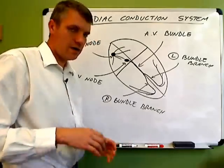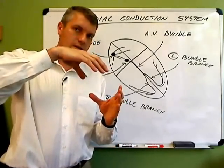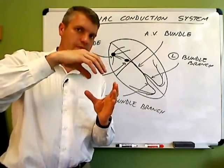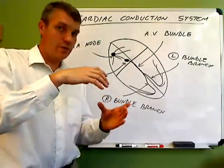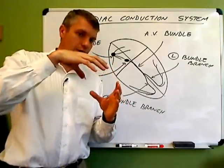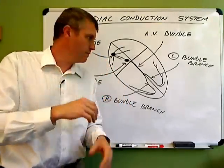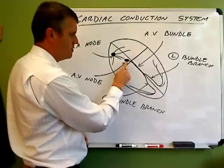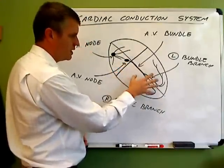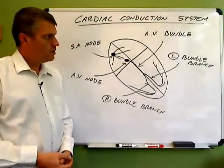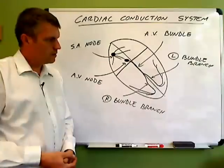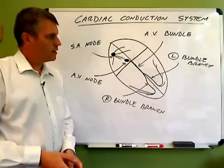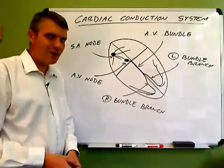So this is why when the heart beats, you get top, bottom, top, bottom, top, bottom. And remember the reason it goes top, bottom rather than simultaneous contractions, which would be less efficient in terms of delivering blood, is because the AV node slows the signal down before we get to the lower part of the heart. These are all of the parts of the cardiac conduction system and basically how they work and why.